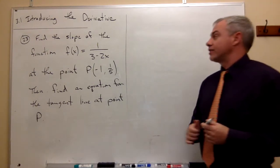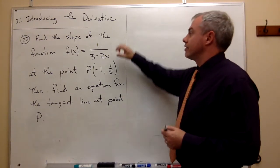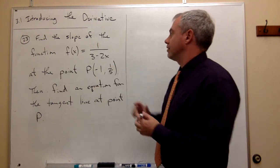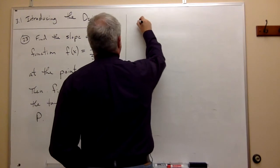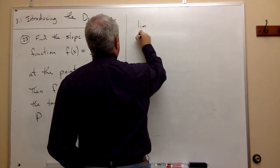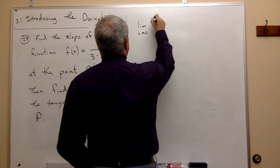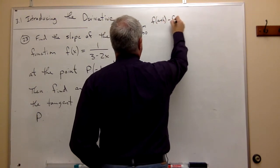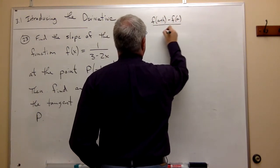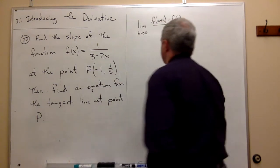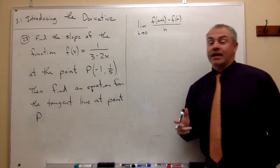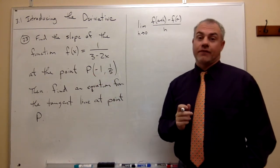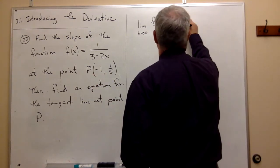The first thing we want to do is find the slope of this function at this point. So what we want to find is the limit as h goes to 0 of f of a plus h minus f of a over h. In this case, we know that a is an x value, and the x value we're interested in is negative 1. So let's go ahead and plug that in.